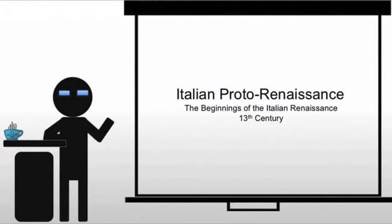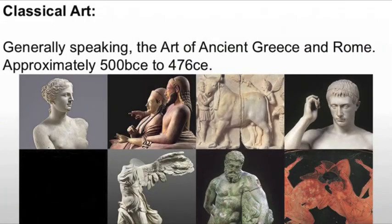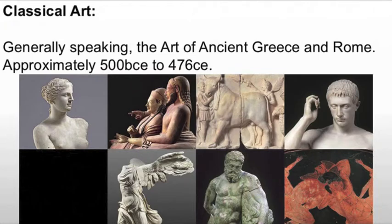The first and most commonly cited influence is the Greek and Roman influence. This is what we mean when we talk about classical art — the art of ancient Greece and ancient Rome, roughly from about 500 BCE to 476 CE, roughly a thousand years, where we see the base of Western society in the ancient Greeks and the ancient Romans.